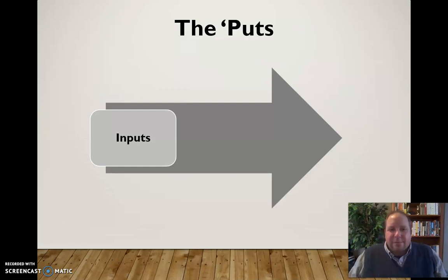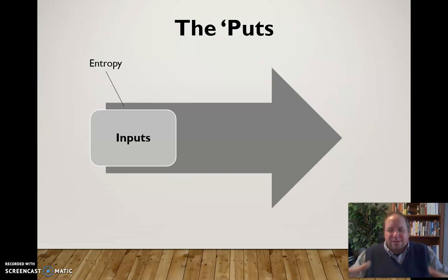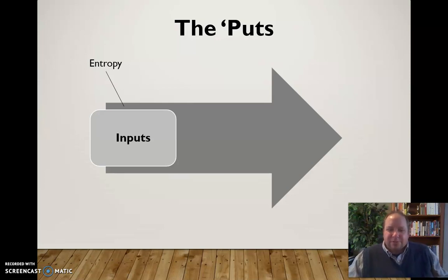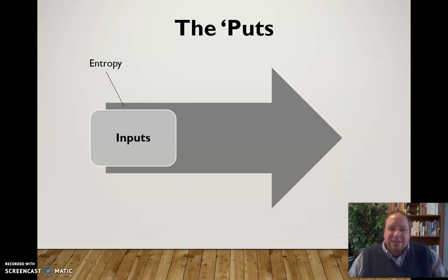If at any point you stop getting inputs, that's what we call entropy. When inputs fail to come in, your group is going to shrink, cease development, stop growing, and stop being effective. It's the same way that if you stopped using your right arm entirely, those muscles would eventually cease to be useful. So we need to keep things feeding into those inputs to avoid entropy in a group.